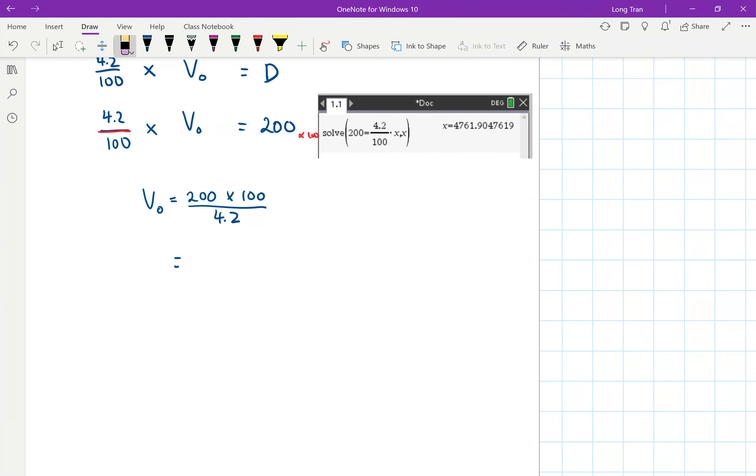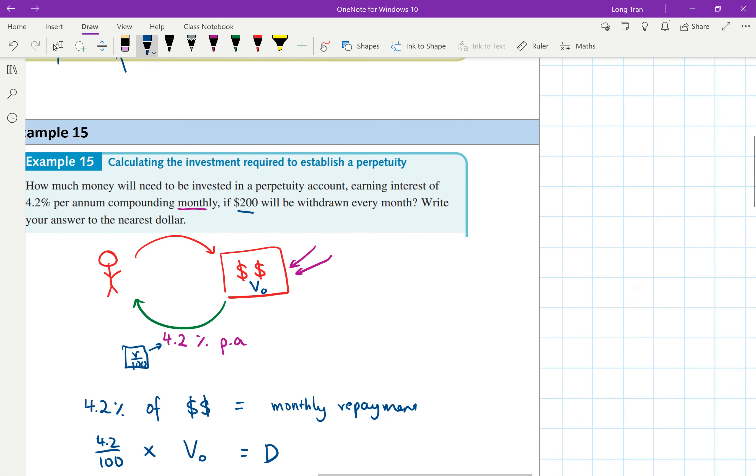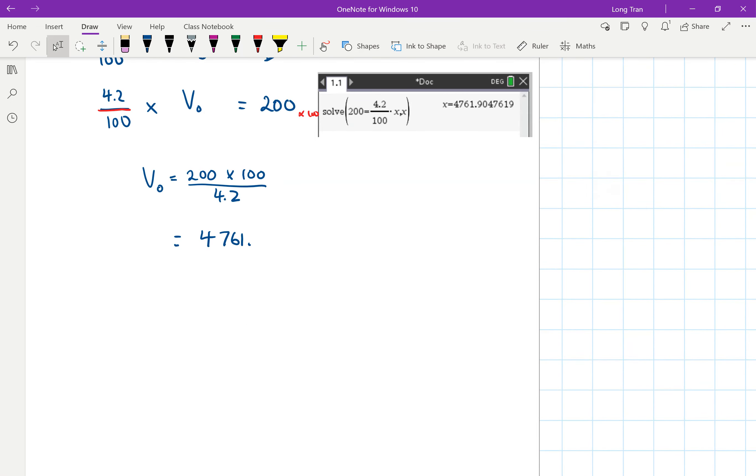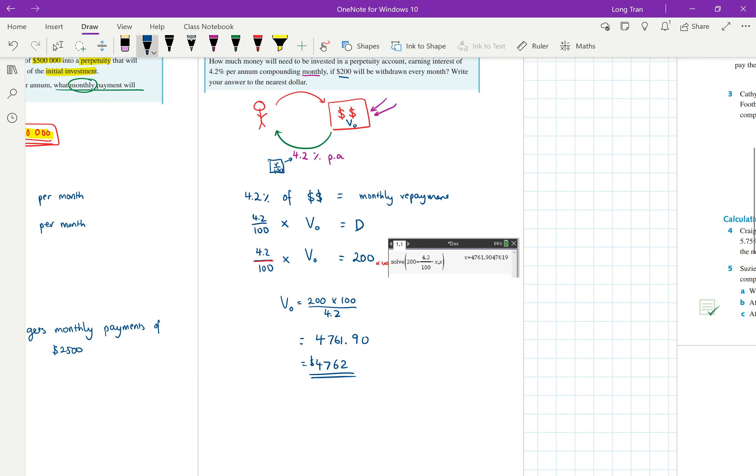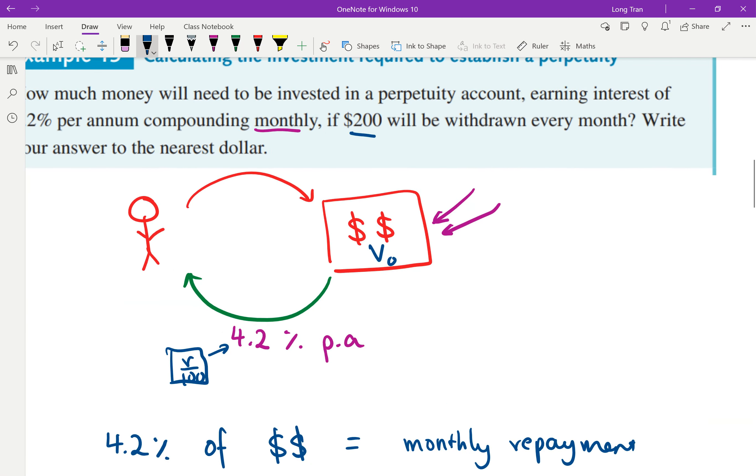So there you go. What's the amount? That tells me that the amount is $4,761.90, which correcting to the nearest dollar would imply that you would need $4,762 invested. So that means when you're opening up a perpetuity account, it's expected that you'll be putting $4,762, and that way that's where they are probably...